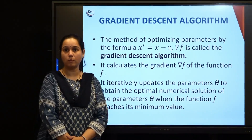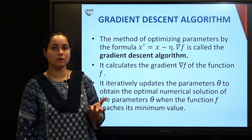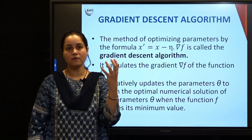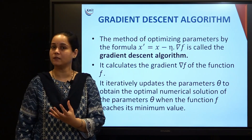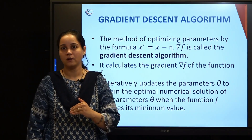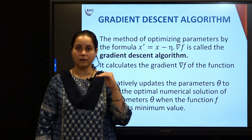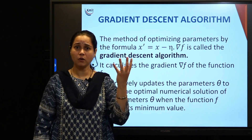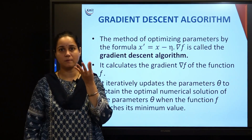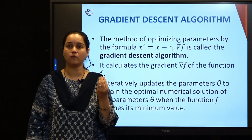When we talk about gradient descent, the gradient is the slope. We always want to optimize our model by reducing the loss function. When we plot the loss function with respect to its parameters, we always want the slope to go down because we want to minimize the loss function. The slope is the gradient, and since we want to move in the direction of decreasing slope, it is called descent.